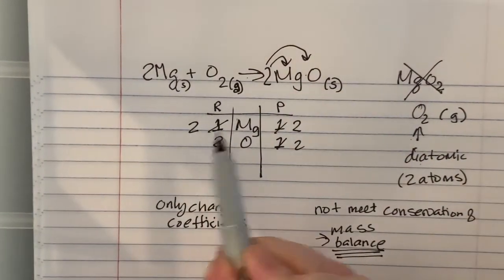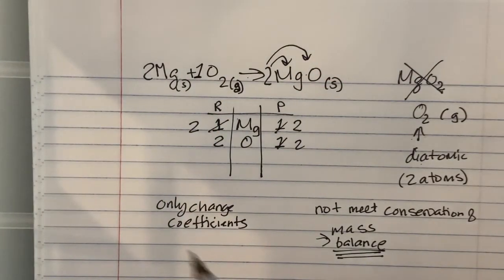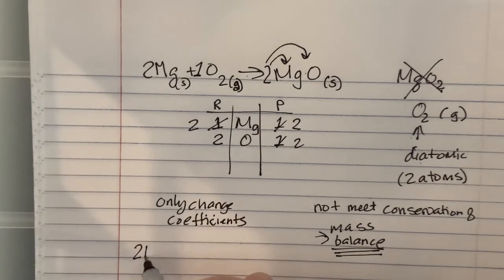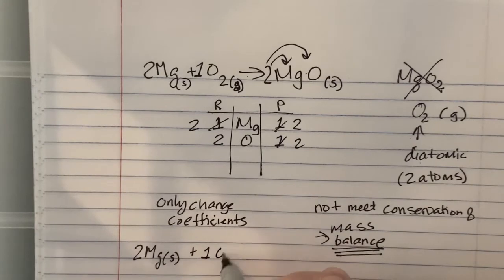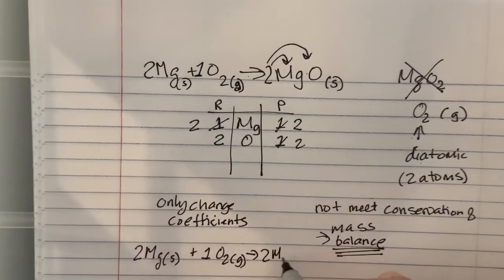And now I have two magnesiums and two oxygens, and I'm going to add in my implied one oxygen there so I can get a clear statement. So now, 2Mg solid plus O₂ gas yields 2MgO solids. That is what your equation is going to be for this unit.